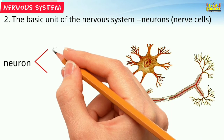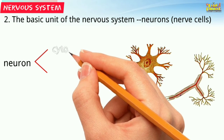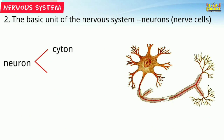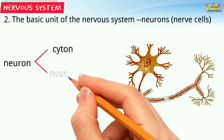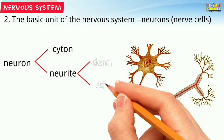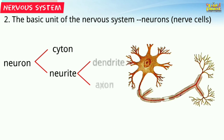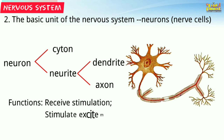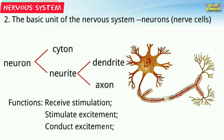The neuron consists of the cytone and neurites. The neurites consist of dendrites and axons. Their function is to receive the stimulus from the surrounding environment, generate excitement, and conduct that excitation signal.